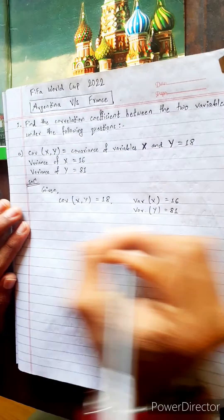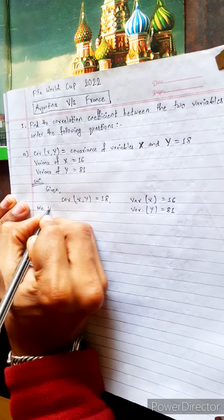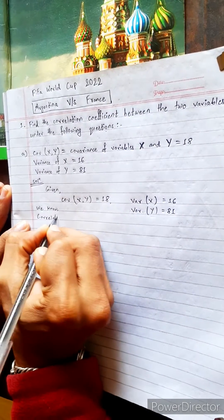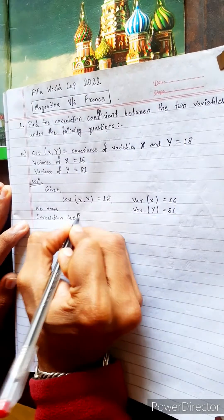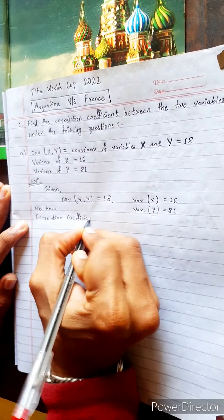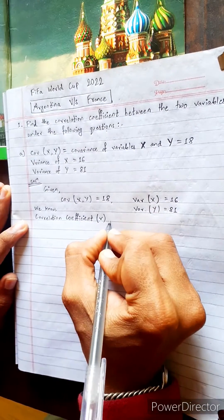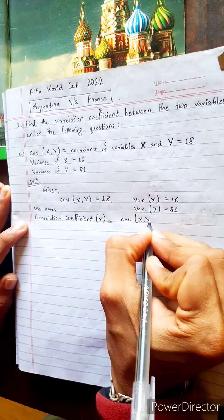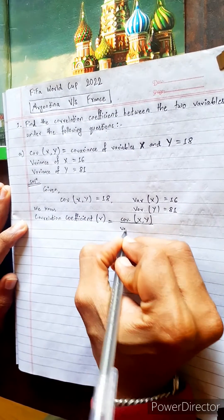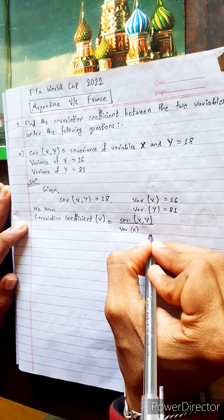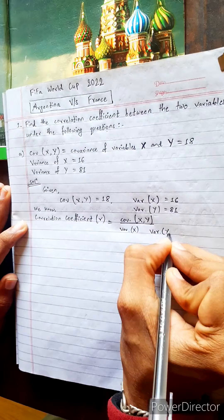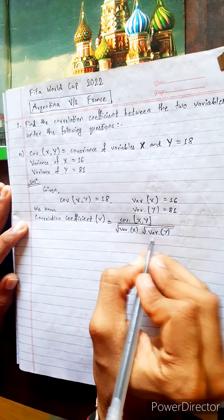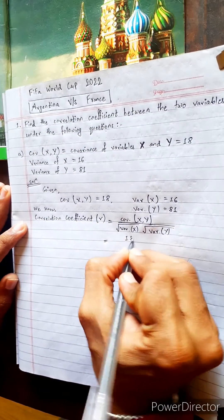Now directly, we know the formula. The correlation coefficient is represented by small r, and it has a simple formula: covariance of X comma Y divided by the square root of variance of X multiplied with variance of Y. It's a simple, one-line formula.